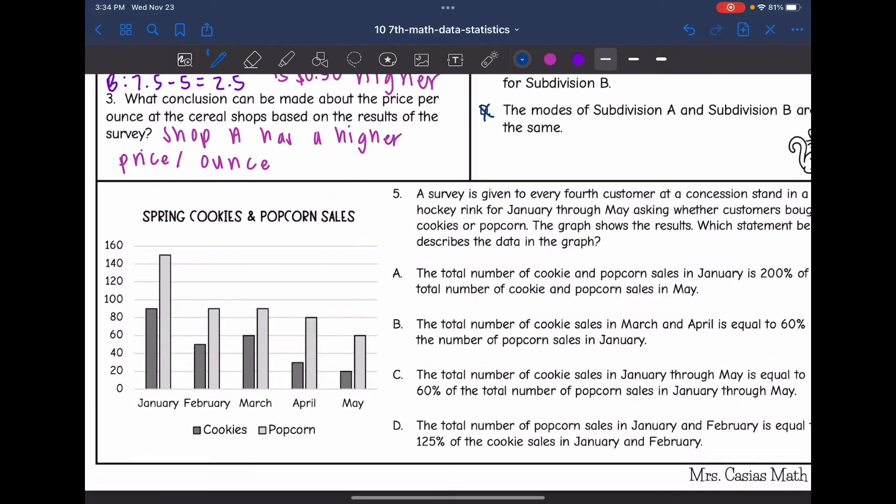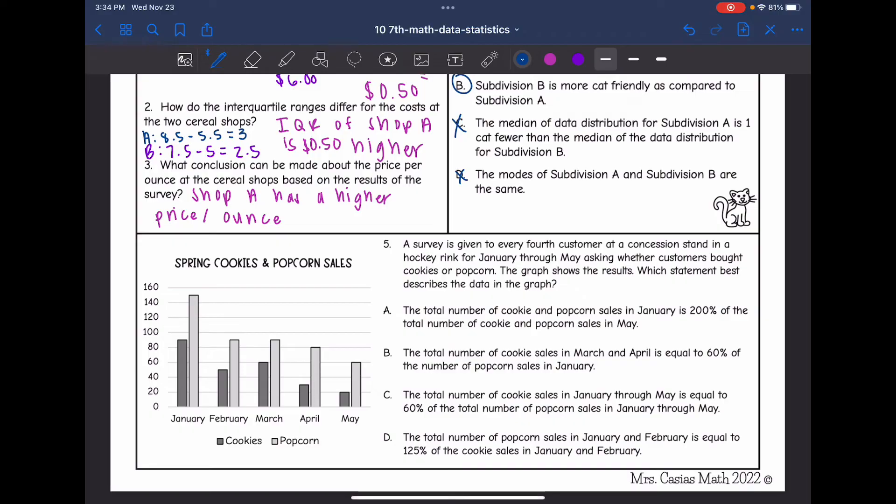Let's look at this last one. It says a survey is given to every fourth customer at a concession stand in a hockey rink for January through May asking whether customers bought cookies or popcorn. The graph shows the results. Which statement best describes the data?